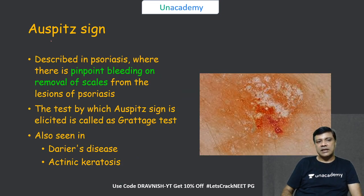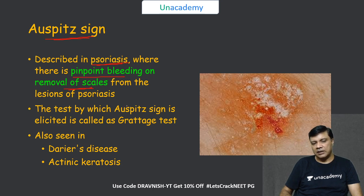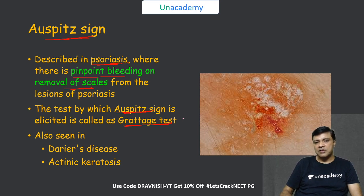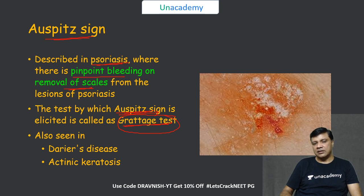The third sign is the Auspitz sign, characteristic of psoriasis, in which you appreciate pinpoint bleeding on removal of scales from a psoriatic plaque. To elicit the Auspitz sign, the test performed is the Grattage test — scraping the lesion of psoriasis with a glass slide. It can also be a feature of Darier's disease and actinic keratosis.